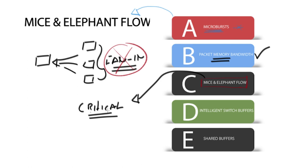But this is sometimes not the case with simple buffer types that cannot distinguish between flow types. Priority can be given by regulating the elephant flows with intelligent switch buffers.